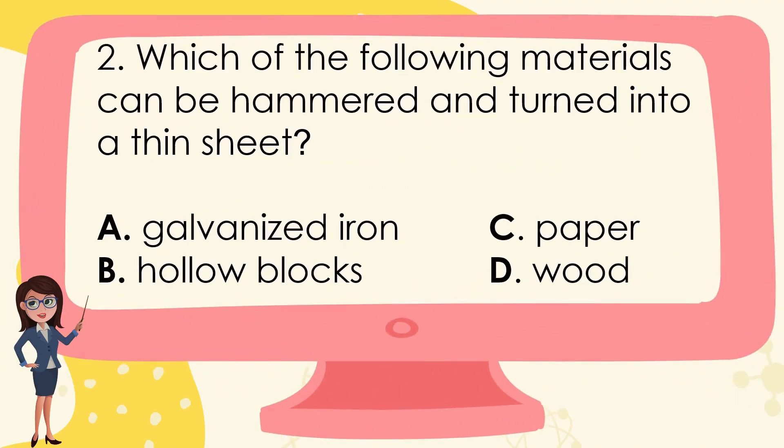Which of the following materials can be hammered and turned into a thin sheet? A. Galvanized iron, B. Hollow blocks, C. Paper, D. Wood. The correct answer is A. Galvanized iron.